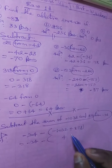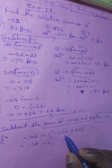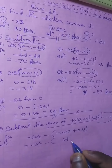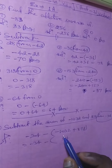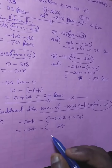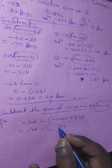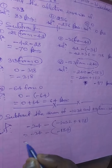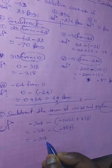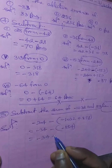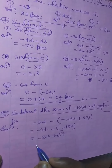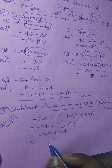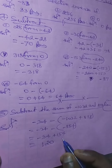Subtracting step by step: 8 from 12 gives 4; 7 from 12 gives 5; 8 from 9 gives 1. The sum inside is 1746 with a positive sign. Then minus 34 minus 1746, with a negative sign. Performing the subtraction gives minus 1780.